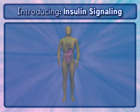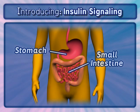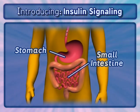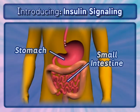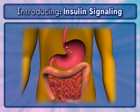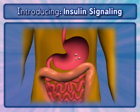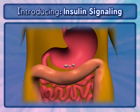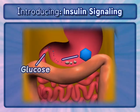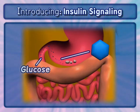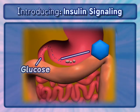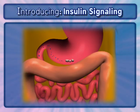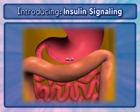Glucose is a good example. It is a critical product of digestion and an essential energy source for cellular metabolism. This energy is produced when glucose is used as a substrate for glycolysis and then the Krebs or citric acid cycle.